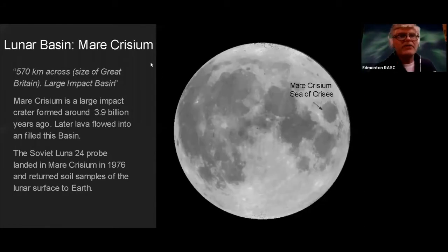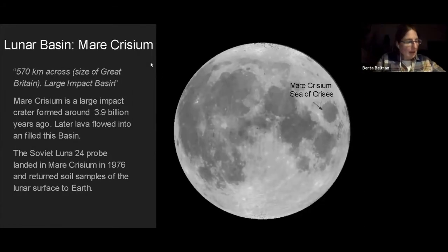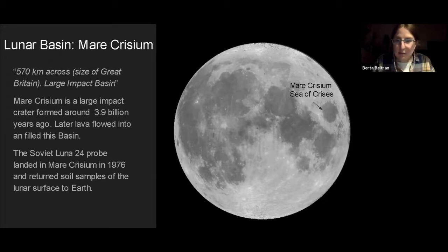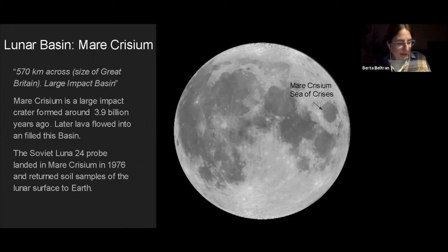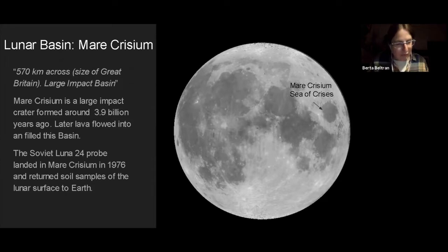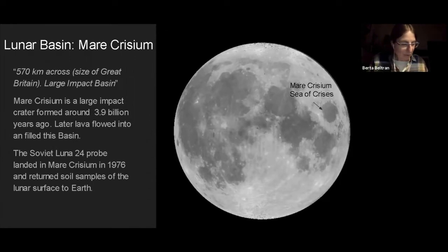For the Explore the Universe certificate, after the constellations section, the next objects to observe are lunar features. The first task is to observe the different phases of the moon — you can use Jeff's 'What's Up in the Sky' for the dates of full moon and new moon each month. There are 12 lunar basins (Maria) and you should see at least 6, plus 12 impact craters of which you should observe at least 6. Today we'll focus on one mare and one crater.